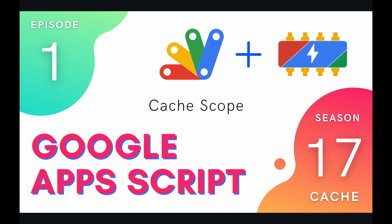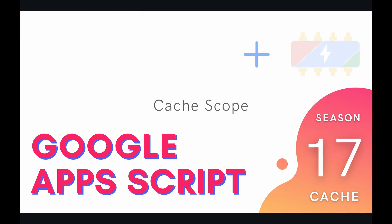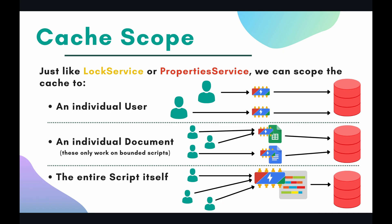Hey coders, welcome to episode 1 of our Cache Service Playlist on the Google Apps Script course. In today's episode we're going to be getting a better understanding of the cache scope. When I refer to the cache scope, I'm basically saying who has access to the actual data that lives on the cache. Just like the lock service or the property service, we can scope the data on that cache to three separate groups: an individual user, an individual document, or the entire script itself.